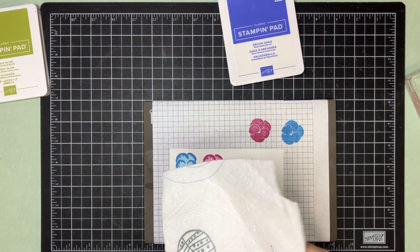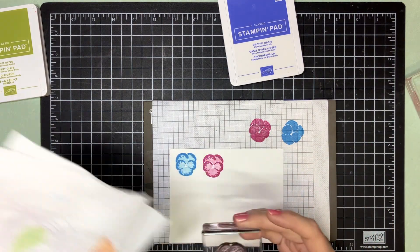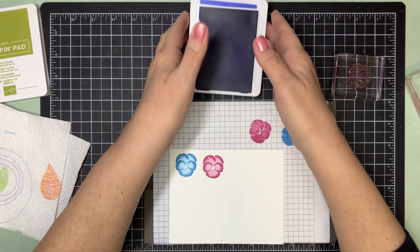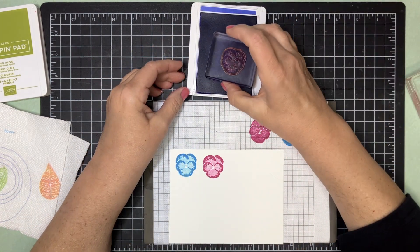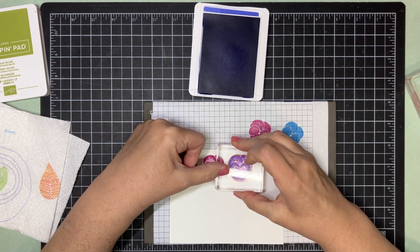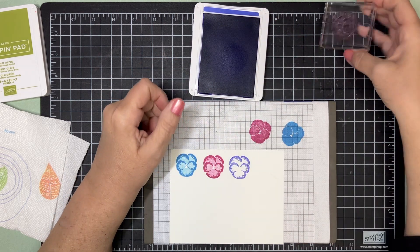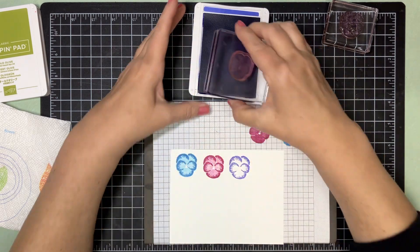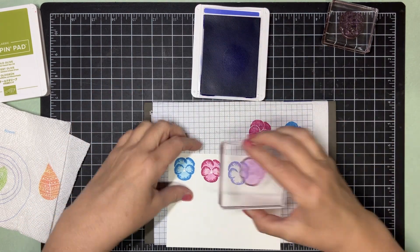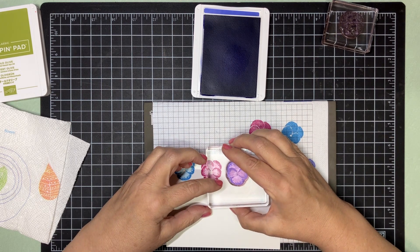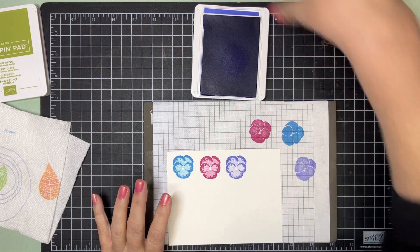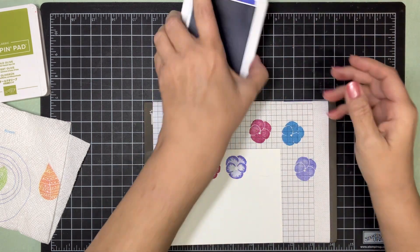The reason I've got a paper towel is my mat is still a little wet. This is Orchid Oasis. I think it's absolutely gorgeous as a pansy. Same thing, we'll ink it up and stamp off. It lines up really easily, not a problem lining up.